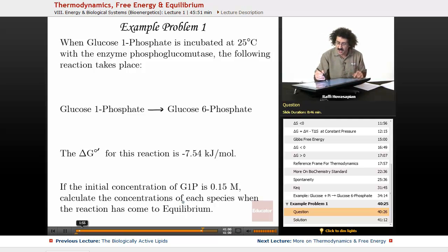We're given our delta G, we're given our initial concentration of glucose 1-phosphate, and we want to find the equilibrium concentrations. Let's see what we can do here.